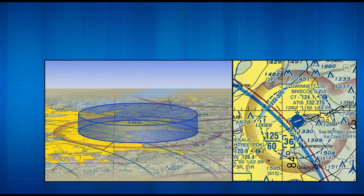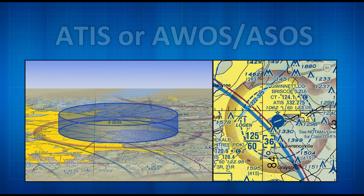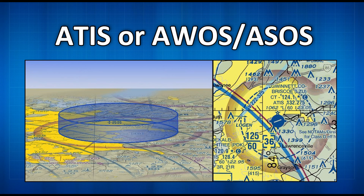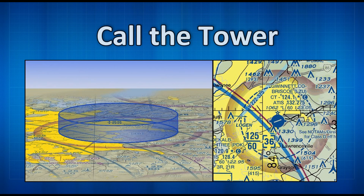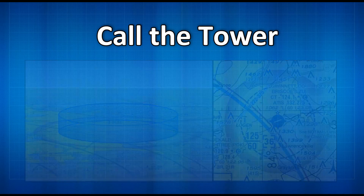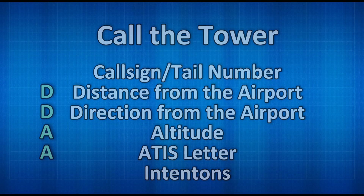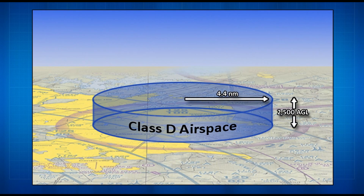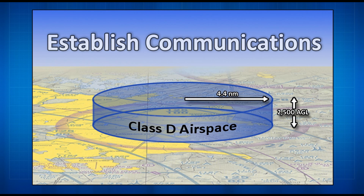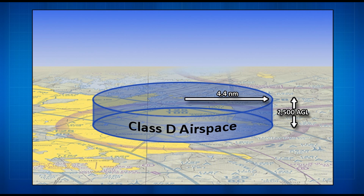Make your job easy — write it down in advance. The second thing to do is have a plan for your approach. About 15 or 20 miles out, go ahead and get the ATIS or AWOS information and write it down. If it's an ATIS, it will have a discrete letter assigned to it and you'll need to include this letter when you call the tower. About 10 miles out, call the control tower. If the frequency is busy, call in with your tail number and wait. Otherwise, give your call sign, distance and direction from the airport, altitude, ATIS letter, and intentions. Class D airspace is generally cylindrical with a four to five mile radius, and by regulation you must establish communications before entering. Communications are established when the controller repeats your call sign.